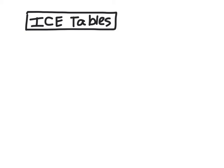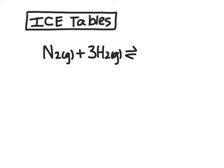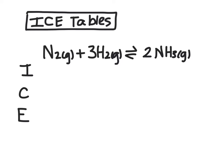I'm going to write a model reaction here: nitrogen gas plus three hydrogen gas molecules combine to form two ammonia molecules, also in the gas phase. We write the word ICE down the side. Often what you'll be given in an equilibrium problem is the initial concentrations of your reactants. So let's say we had one mole per liter of both of these reactants and we didn't start with any product.